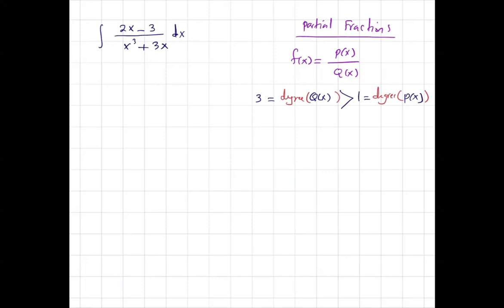No long division is needed. As long as they have the same degree, you have to start by taking the long division. In the next step, we start breaking down the denominator into smaller pieces so we can recognize the pattern. x cubed plus 3x can be written as x times x squared plus 3.